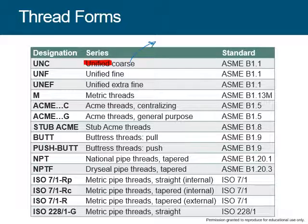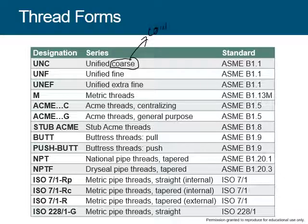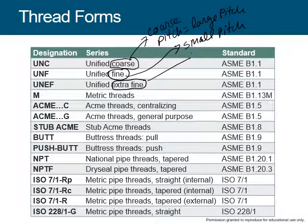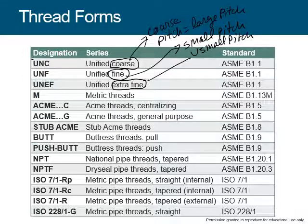A coarse pitch is a large pitch, and then there is fine, which is a small pitch, and then extra fine, which is a very small pitch. It's kind of like in all systems — we're classifying threads based on the pitch, or based on how fast the nut will move for one turn. UNC is unified coarse, UNF is unified fine, and UNEF is unified extra fine. Then M is for metric threads.